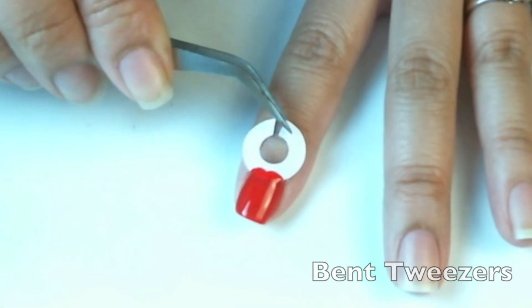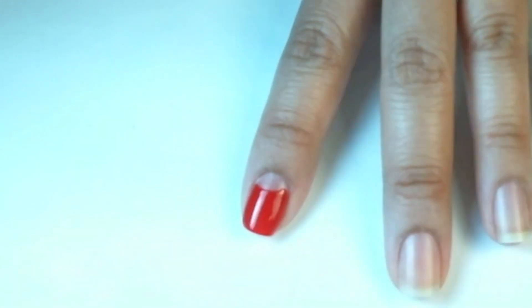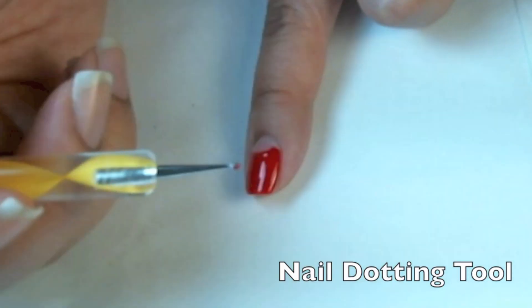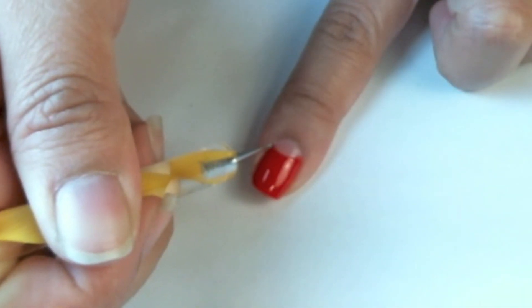With bent tweezers, I'm going to carefully pull and roll the reinforcement label off. With a nail dotting tool, I'm going to fill in the spaces to make it a complete half circle.